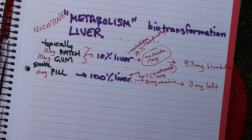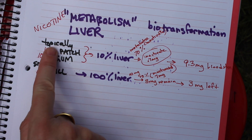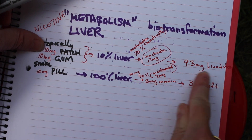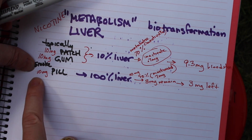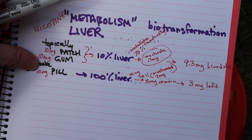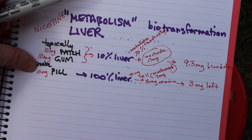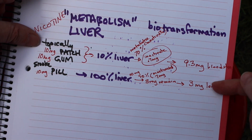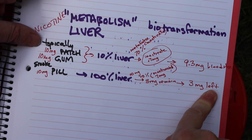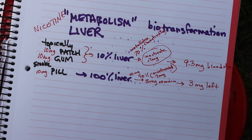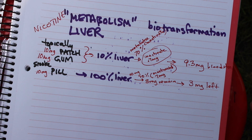Certain drugs are metabolized at a large percentage with each pass. So after only one pass, the 10 milligram patch leaves almost all of it in the bloodstream, but the pill leaves only 3 milligrams because it's 70% deactivated by the liver. That means the amount that actually gets to the bloodstream is quite a bit lower when given orally than by any other route — including IV, inhaled, or anything else.